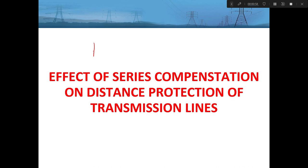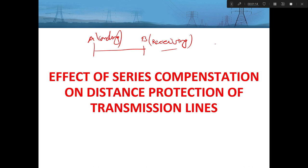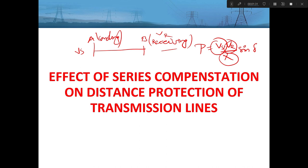In an AC system, suppose a two-bus AC system with bus A as the sending end and bus B as the receiving end. The total power that can be transmitted from bus A to bus B is given by P = Vs·Vr / X · sin(delta), where Vs is the sending end voltage, Vr is the receiving end voltage, X is the reactance of the transmission line, and delta is the angle between Vs and Vr.